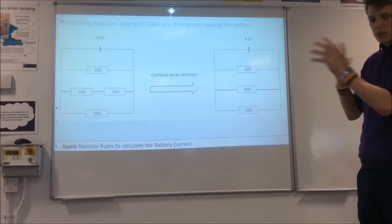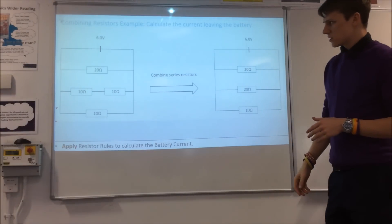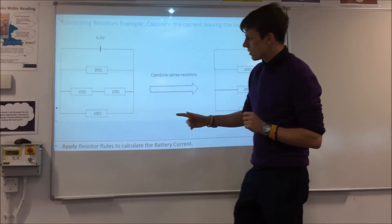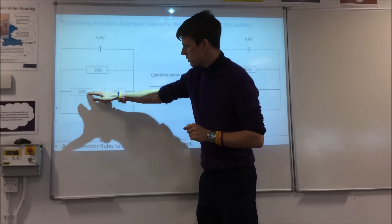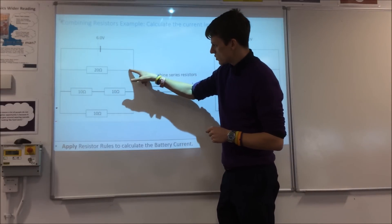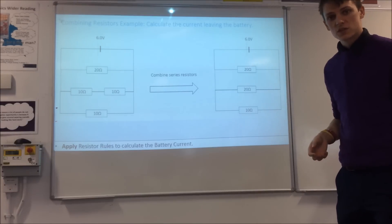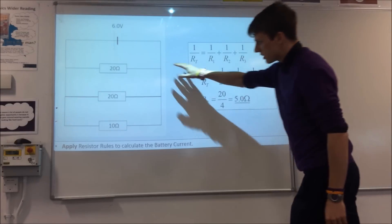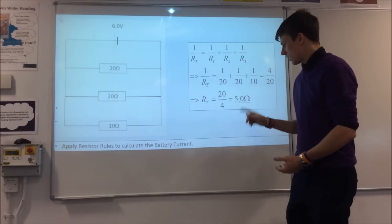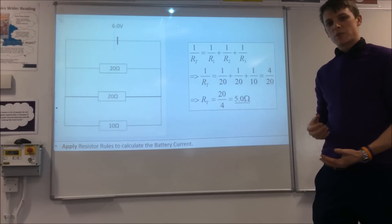Putting those two things together, in a circuit with both series and parallel resistors, the first thing to do is deal with any series resistors. These two here are in series with each other because there are no splits between them, so we combine them to get 20 ohms overall. The other resistors have junctions between them so they're not in series. Then we've got three resistors in parallel, so we flip them all over, add them together, flip back, and get an overall resistance of 5 ohms.